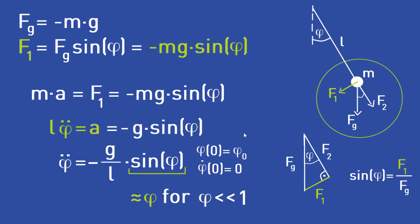Next, we can write down our starting conditions: a starting angle phi zero and a starting velocity. The biggest problem is that this differential equation cannot be solved by hand. Therefore, there is often an approximation used called the small angle approximation: for really small angles, the sine of phi is approximately phi. When replacing sine of phi with phi, we get a second-order linear differential equation that can be solved pretty easily.